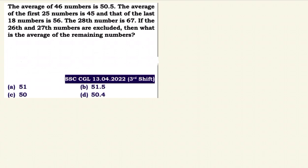The average of 46 numbers is 50.5. The average of the first 25 numbers is 45, and that of the last 18 numbers is 56. The 28th number is 67. If the 26th and 27th numbers are excluded, then what is the average of the remaining numbers?